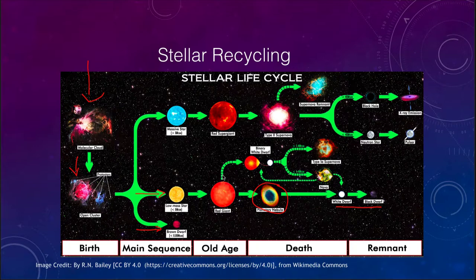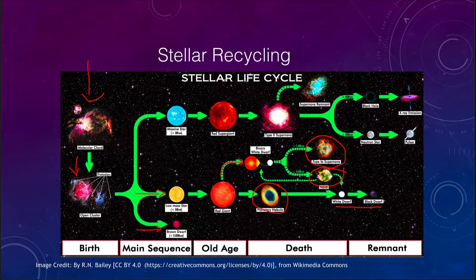If it is a low-mass star in a binary system, it takes a slightly different route. Depending on the masses, it can form either a supernova explosion — which sends material back out into space — or a nova explosion, which also sends some material back out. All of these involve enriched materials with higher concentrations of heavier elements than the material that originally formed the star.